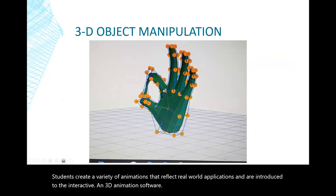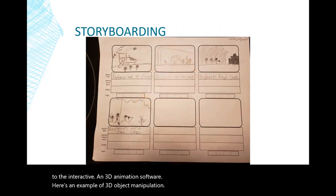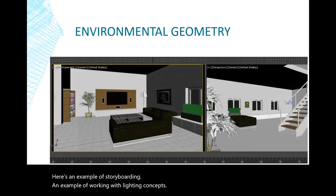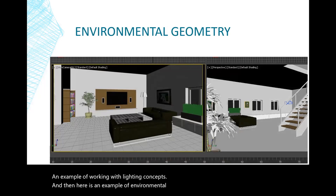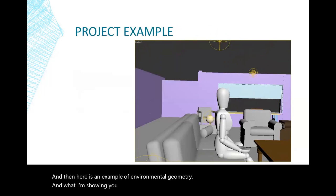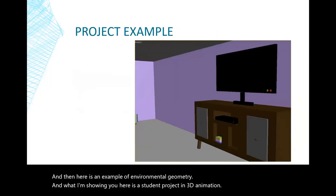Here's an example of 3D object manipulation. Here's an example of storyboarding. An example of working with lighting concepts. And here is an example of environmental geometry. What I'm showing you here is a student project in 3D animation, created about two years ago.